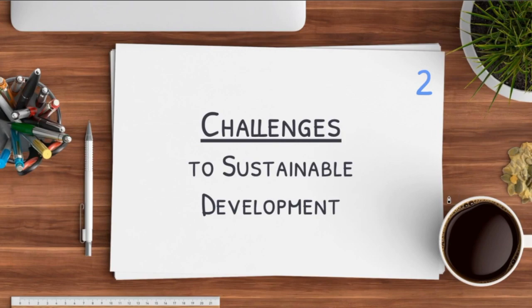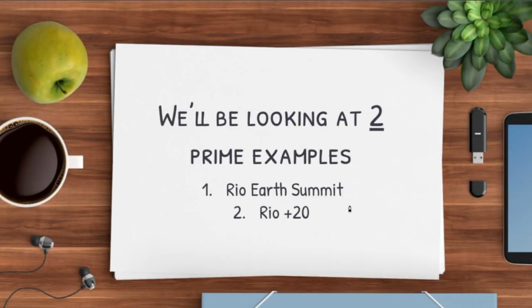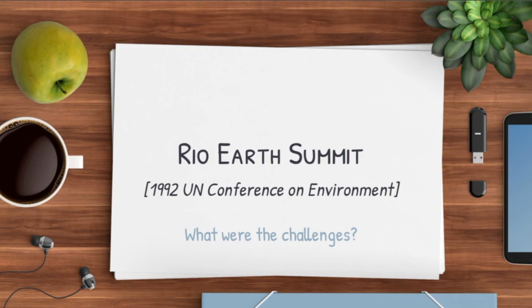Hey guys, welcome back to another video. We're back with human geography. Today we're going to be covering part two, which is on challenges to sustainable development. Basically, this topic covers two prime examples: the Rio Earth Summit as well as Rio+20. These are the two main examples you need to know, and we'll understand what challenges these two summits actually faced, which is why sustainable development is very hard to achieve.